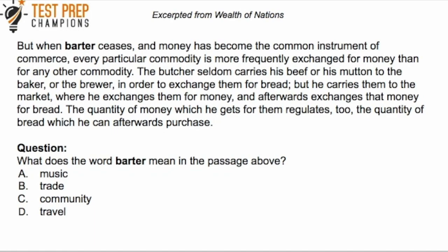The passage says: 'But when barter ceases and money has become the common instrument for commerce, every particular commodity is more frequently exchanged for money than for any other commodity. The butcher seldom carries his beef or his mutton to the baker or the brewer in order to exchange them for bread, but he carries them to the market where he exchanges them for money, and afterwards exchanges that money for bread. The quantity of money which he gets for them regulates the quantity of bread which he can afterwards purchase.' Question: What does the word 'barter' mean in the passage? A. Music, B. Trade, C. Community, D. Travel.